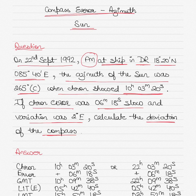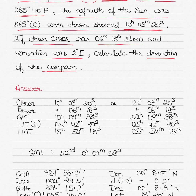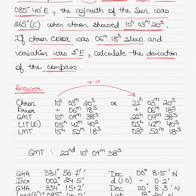We'll find the compass error first, then apply the variation to calculate the deviation. The first part of the solution is resolving the ambiguity of the chronometer time. When the chronometer time is given as 10 hours 03 minutes 20 seconds, the other possibility is 22 hours 03 minutes 20 seconds — we add 12 hours. So 10:03:20 could be morning or evening (which would be 22:03:20). We write down both possibilities.